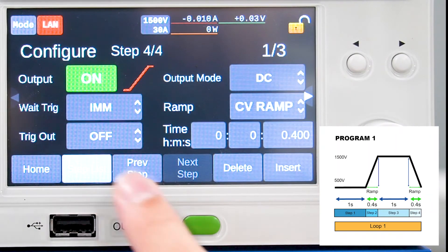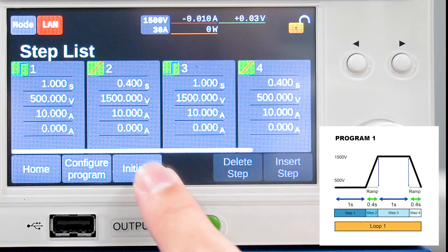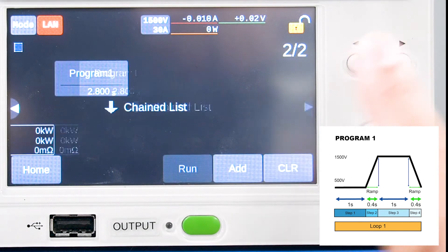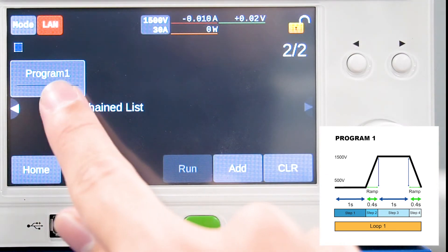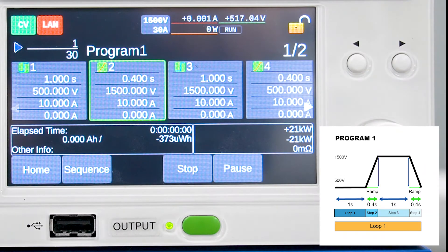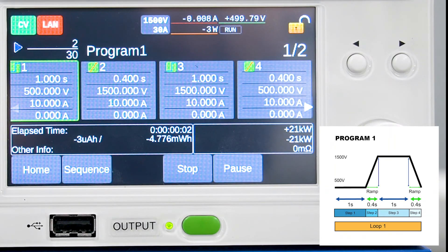Press step list to display the steps that have been set up so far. Press initiate and select program 1, which is a collection of the 4 steps we have created. Finally, press add and run to execute. The function is now running.